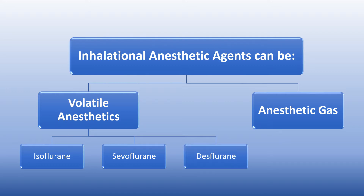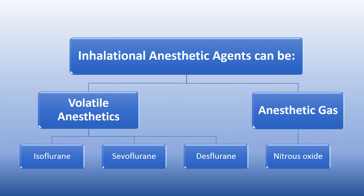Also, historically we used ether as a volatile anesthetic agent, but we don't use it anymore, and halothane, also we stopped using it because of its side effects. An example of anesthetic gases is nitrous oxide. It is very common to be used in dental offices and other surgery, but it is not common to be used in Egypt nowadays.